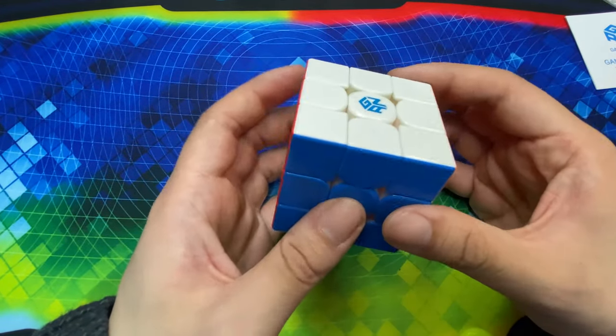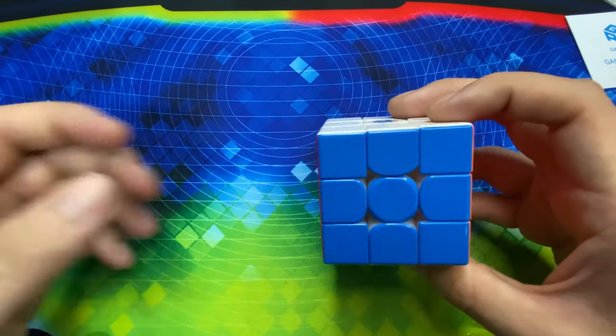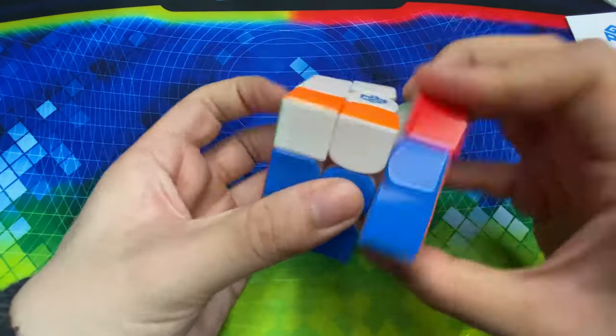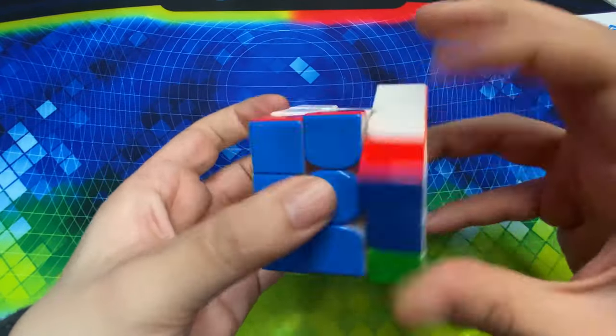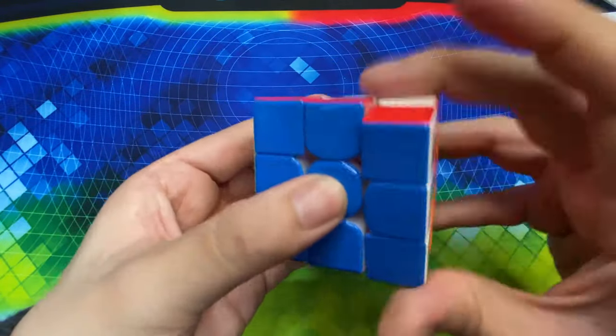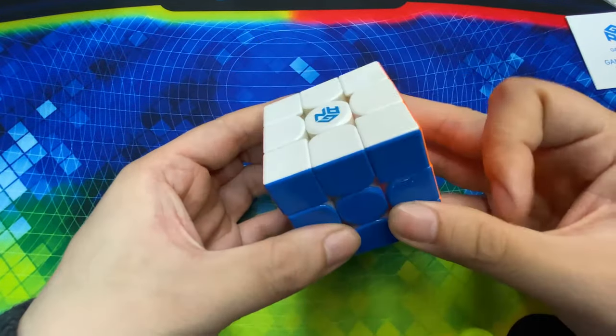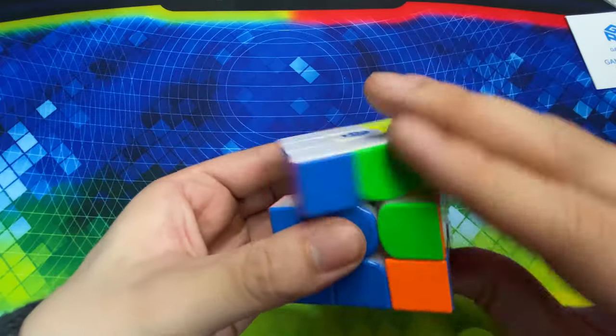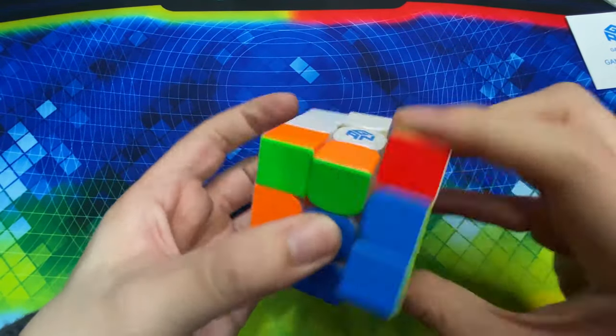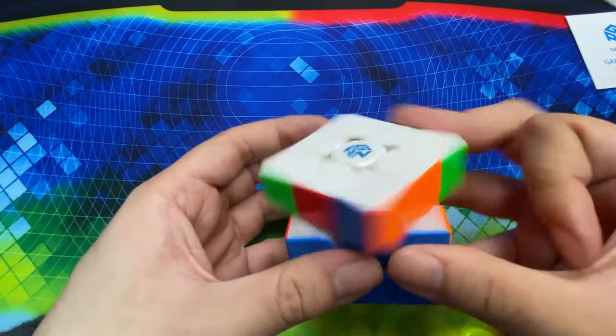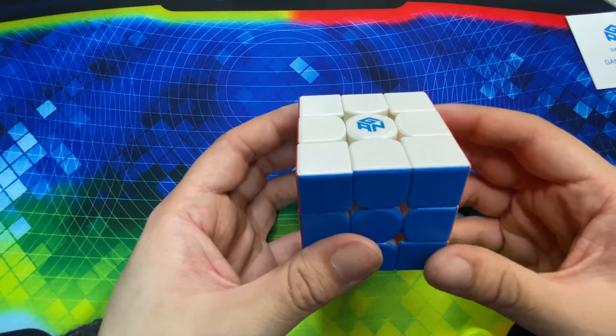No es un problema ya que me gustan mucho los colores y la apariencia de los cubos GAN. Ahora si vamos a empezar con los primeros giros. Este cubo no les voy a mentir chicos es super ligero, no pesa nada. Creí que el GAN 12 pesaba poco pero es que este no pesa nada, debe pesar unos 60 gramos a lo mucho no creo que más.